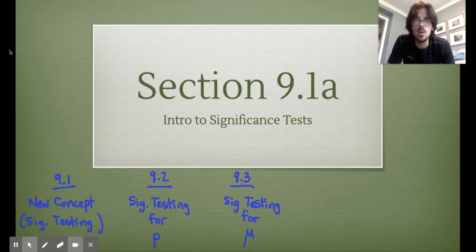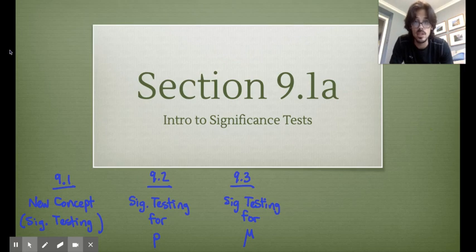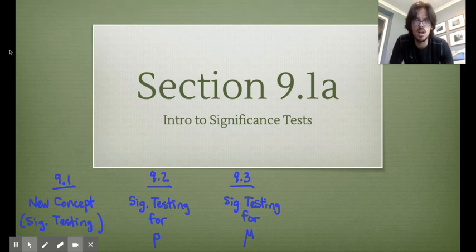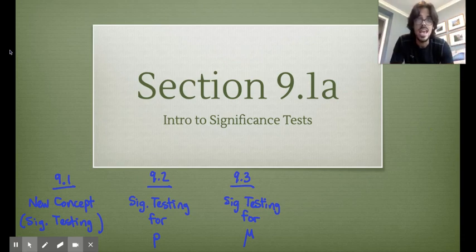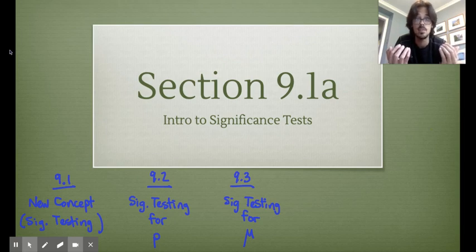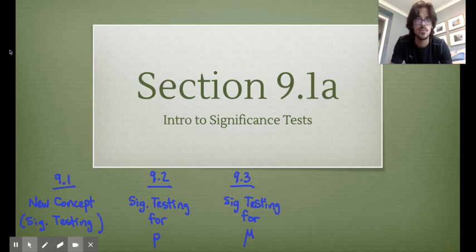Chapter 9 is all about the concept of a significance test. This is the most important chapter we have left in this class because when we learn how to do significance tests, we use them in chapters 9, 10, 11, and 12. Statistical inference means using our data at hand to make predictions or generalizations about our population.